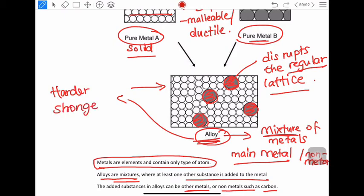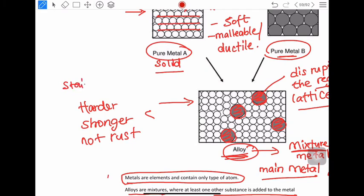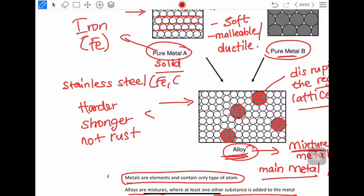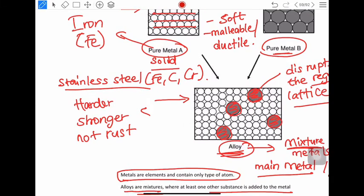For example, alloys will be harder, stronger, and have resistance to corrosion, so will not rust. Pure iron will rust, but stainless steel, which is a form of iron, contains iron, carbon, and chromium. This does not rust. So harder, stronger, resistant to corrosion, but will be less malleable because the layers cannot slide over each other.